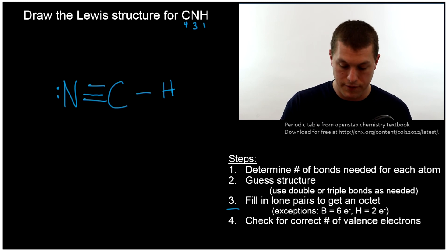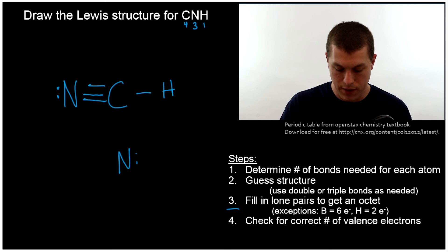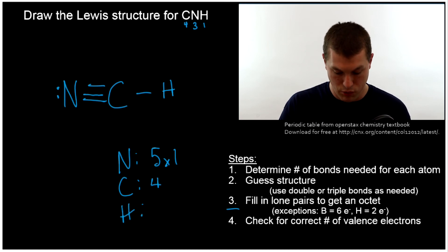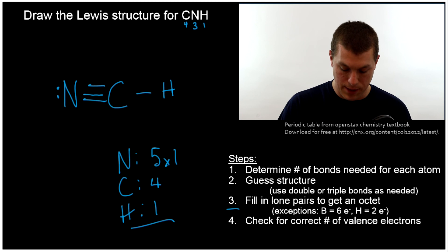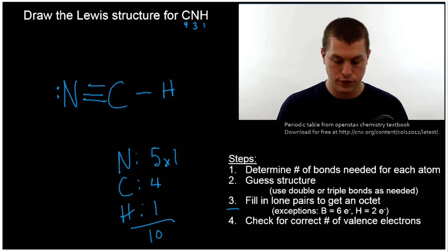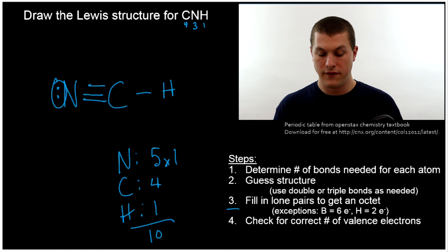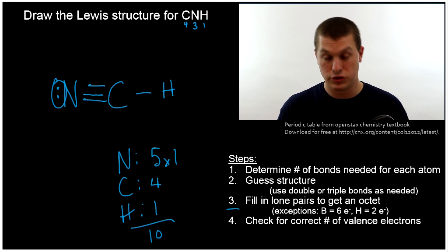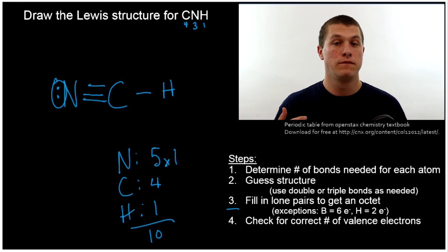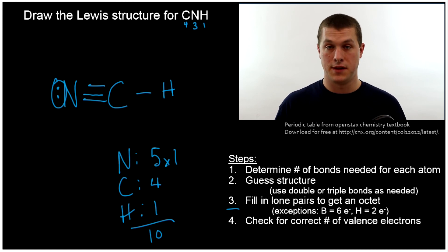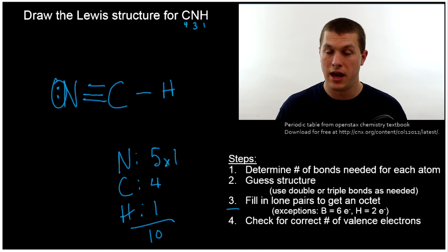Now we check the number of valence electrons. Nitrogen has five valence electrons times one; carbon has four; hydrogen has one — adding those up gives us ten. In our structure: two from the hydrogen bond, plus six from the carbon-nitrogen triple bond equals eight, then nine and ten from the lone pair. That's ten total valence electrons around HCN. We've used triple bonds, double bonds, single bonds, and lone pairs to give the atoms exactly how many bonds they want and ultimately give them an octet, and we double-check by confirming the total valence electron count.